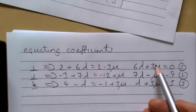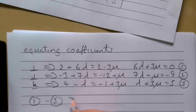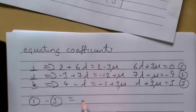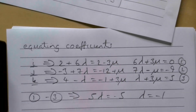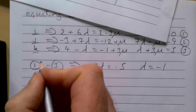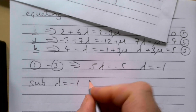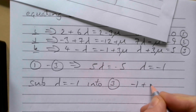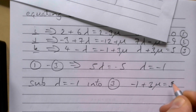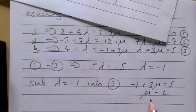There's a convenient 3μ in both equations 1 and 3. Taking equation 1 minus equation 3 eliminates μ, giving 5λ = −5, so λ = −1. Substituting λ = −1 into equation 3: −1 + 3μ = 5, giving μ = 2. We've used equations 1 and 3, so let's check with equation 2.